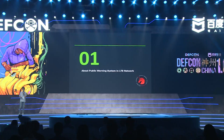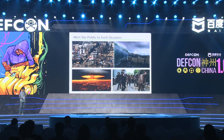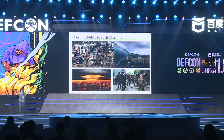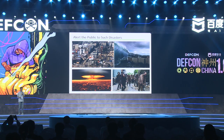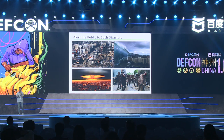Let's talk about what a public warning system in an IoT network is. The public warning system is used to alert the public to disasters such as earthquakes, tsunamis, nuclear war, and even zombie outbreaks. In other words, when you receive a warning message on your mobile phone, it usually means you are in big trouble and should find a safer place as soon as possible.